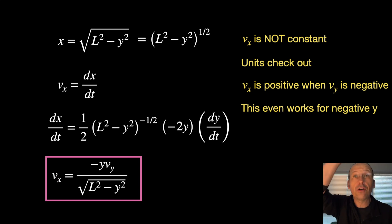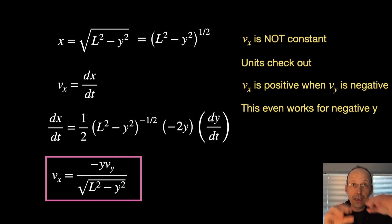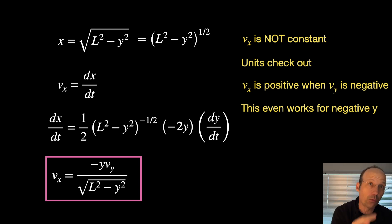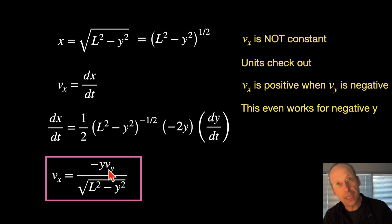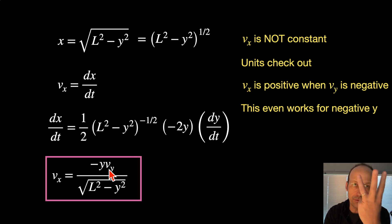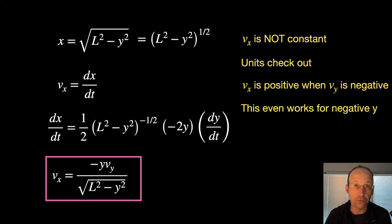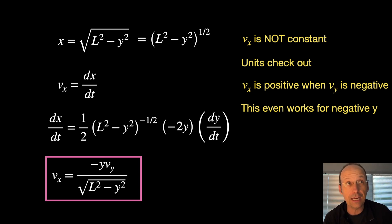What if the tip of the ladder goes below the floor? If that happened, Y would be negative, and the other end of the ladder would start moving back towards the wall, giving it a negative velocity. If VY is negative and Y is also negative, you get three negatives — negative times negative times negative — so VX would be negative. That means the floor part moves back towards the wall, which makes physical sense.